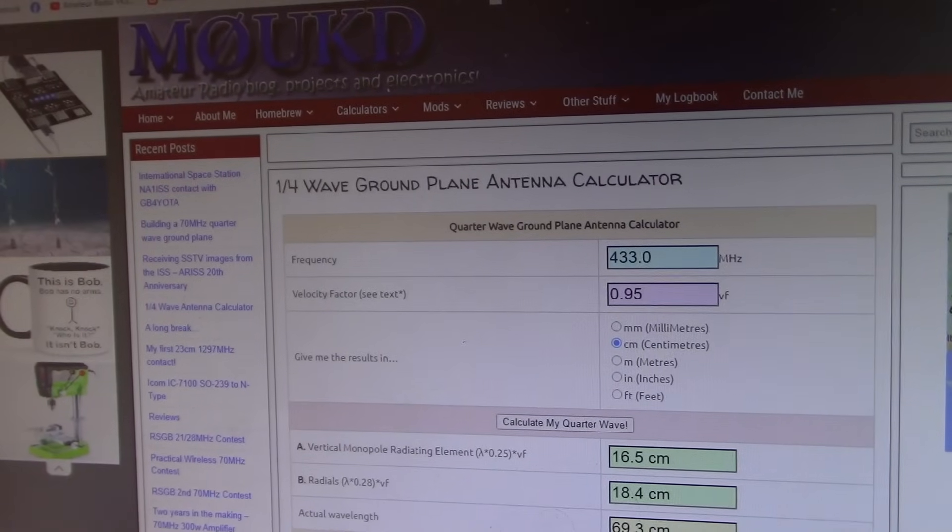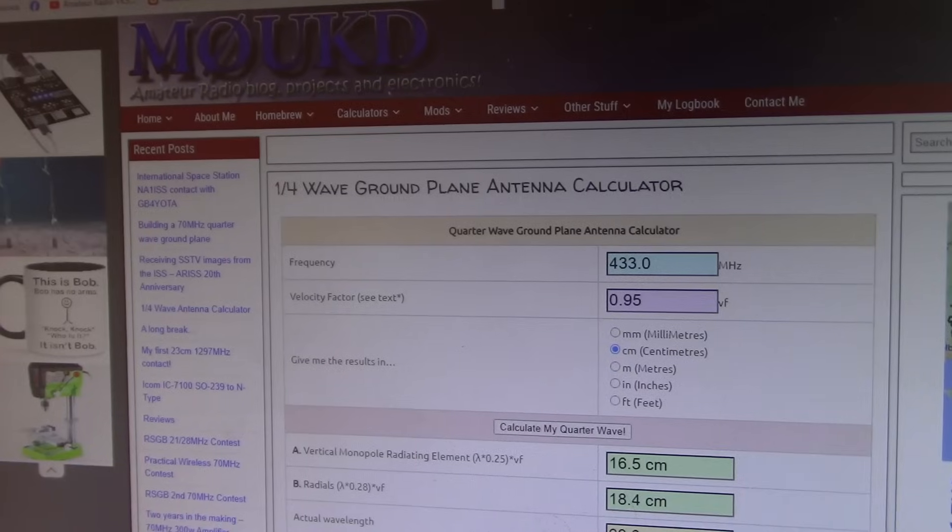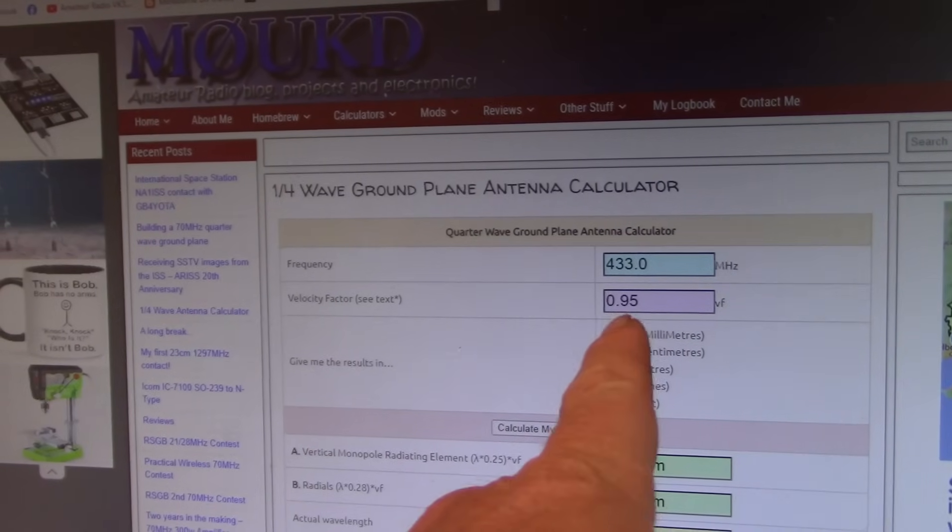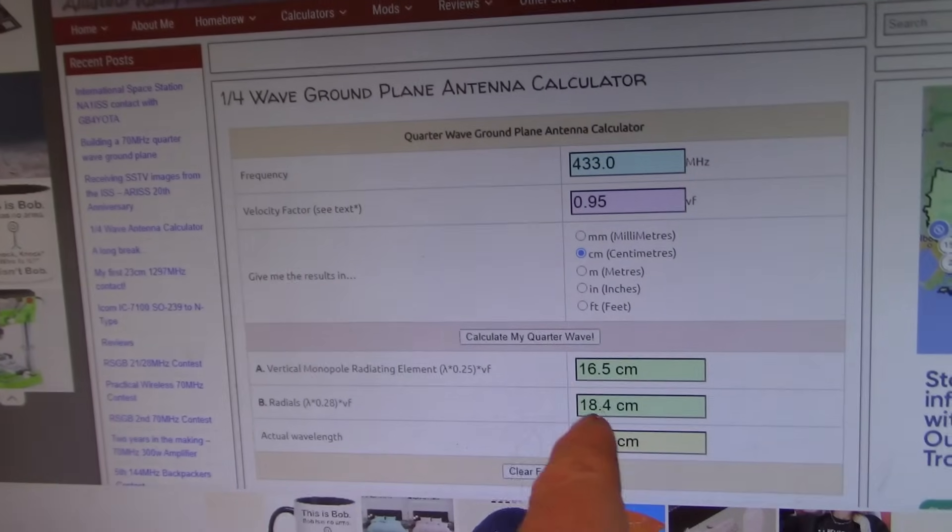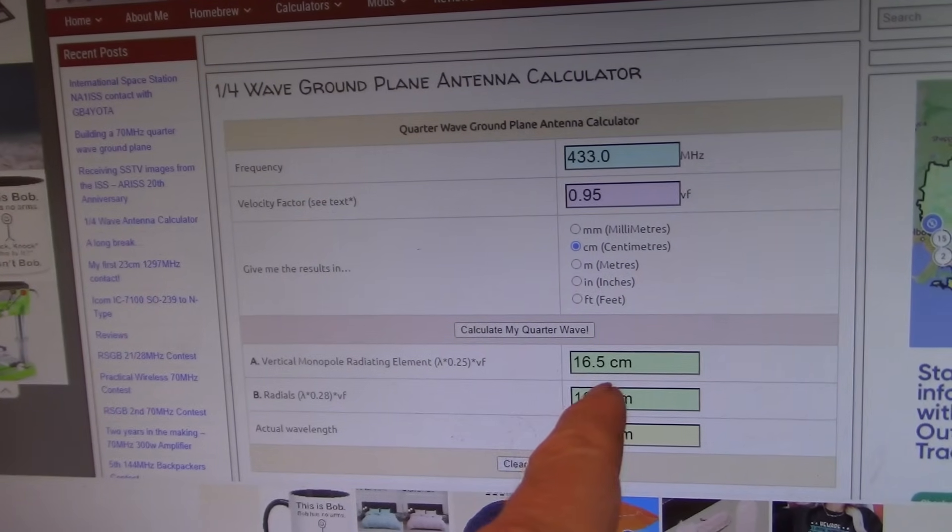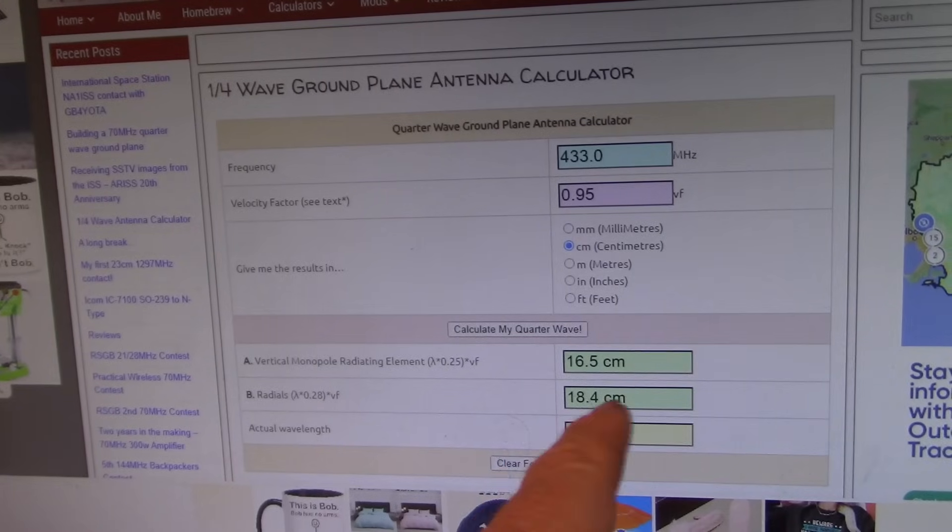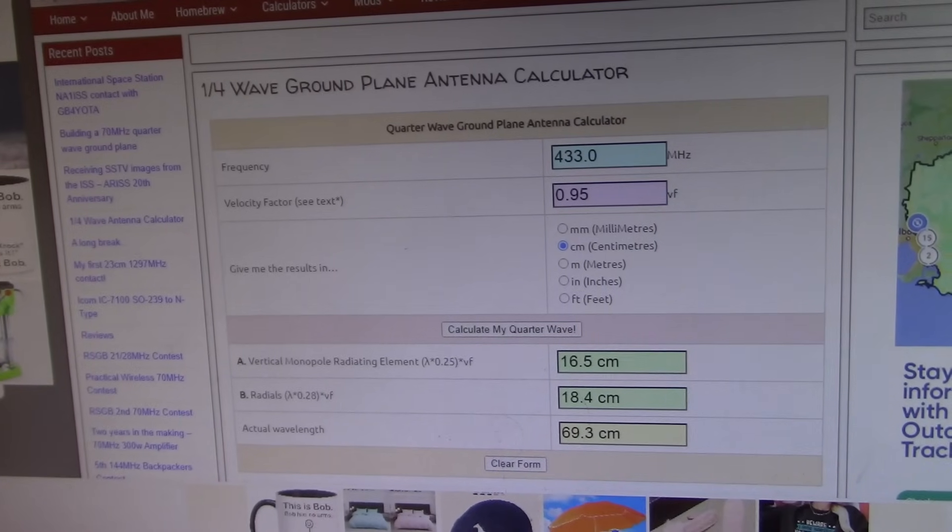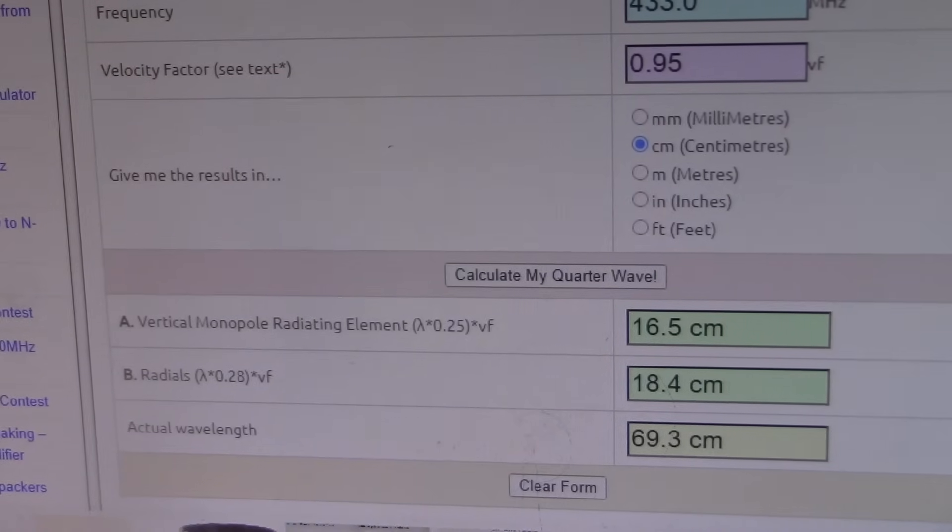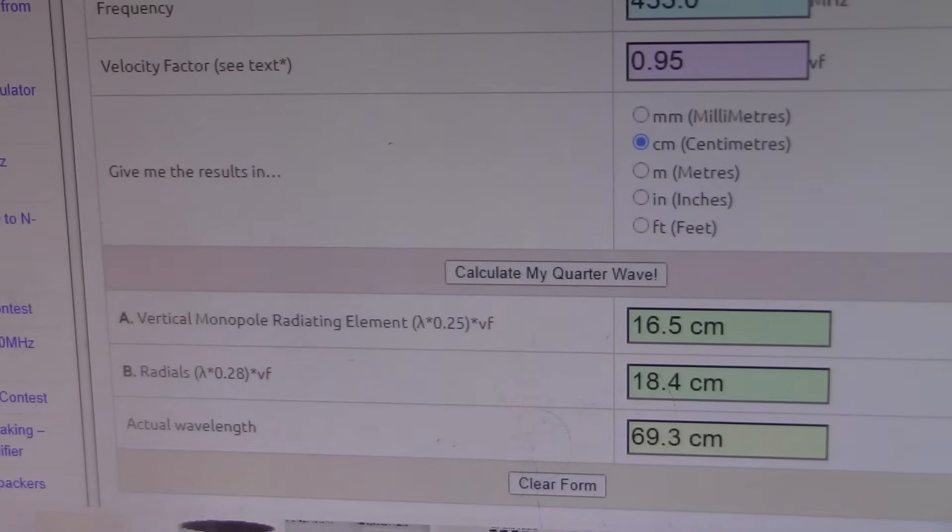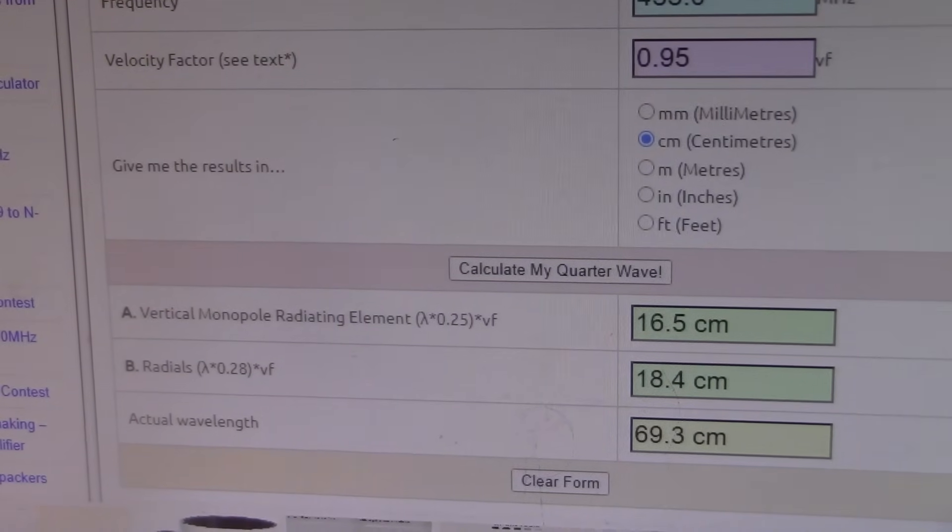Just using M0UKD's calculator. For a quarter wave ground plane on 70cm, the radiating element 16.5cm and 18.4cm for the radials. You can find this calculator at M0UKD.com.